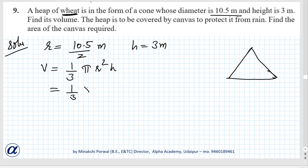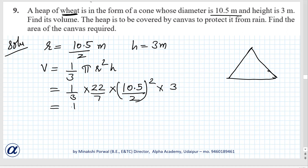So: 1 by 3, times 22 by 7, times r equals 10.5 upon 2 — the whole squared — times 3. First we have to find the volume, and if the heap is to be covered by canvas to protect it from rain, find the area of canvas required. That is actually the curved surface area. We need to find both volume and curved surface area.